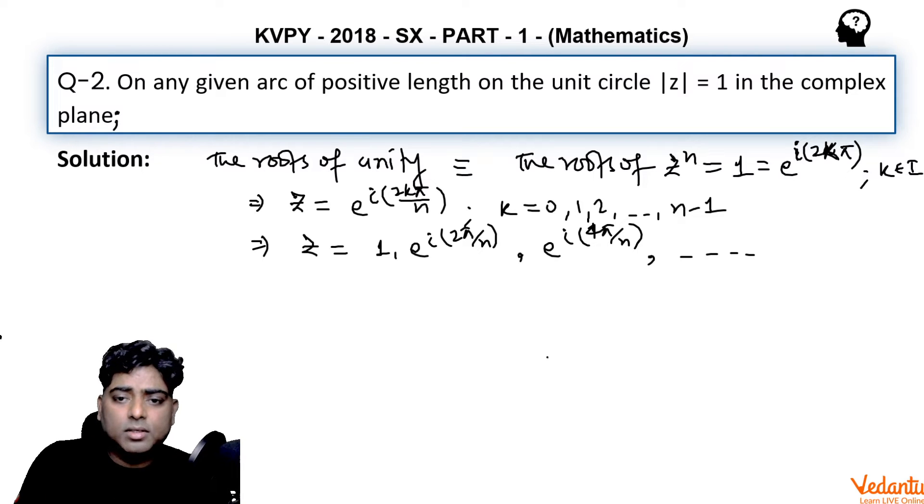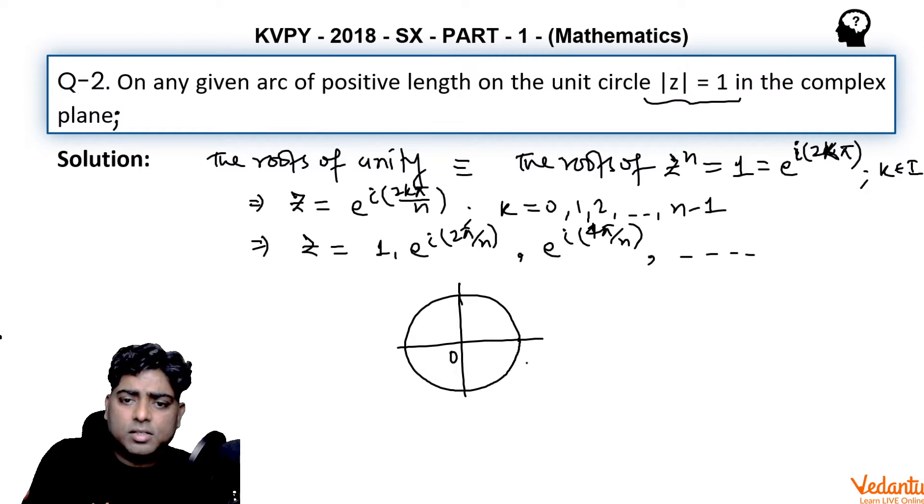Now on this circle—this is a unit circle I'm plotting—center at origin, radius 1. On this circle, if some given arc, on any given arc of positive length, suppose I take some this arc here, this arc length is given.